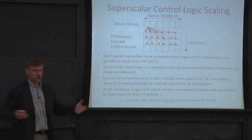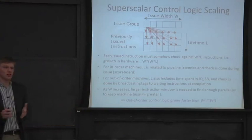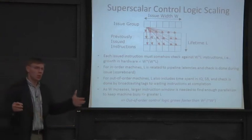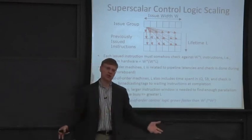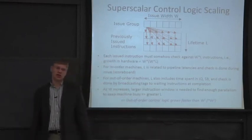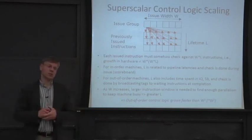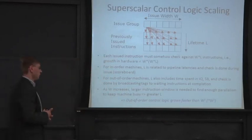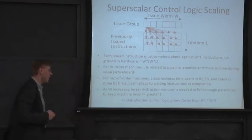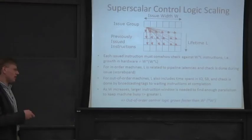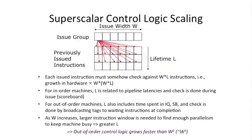This is why front ends of out-of-order processors can start to get more and more pipeline stages — like in the Pentium 4, there are multiple stages out front to handle this. You even have to pipeline that logic, which makes it even more challenging. Roughly, the out-of-order control logic scales somewhere between width squared and width cubed, which is not very good.